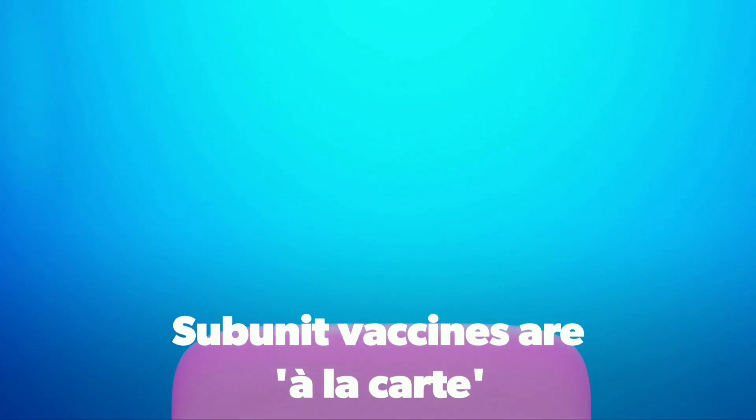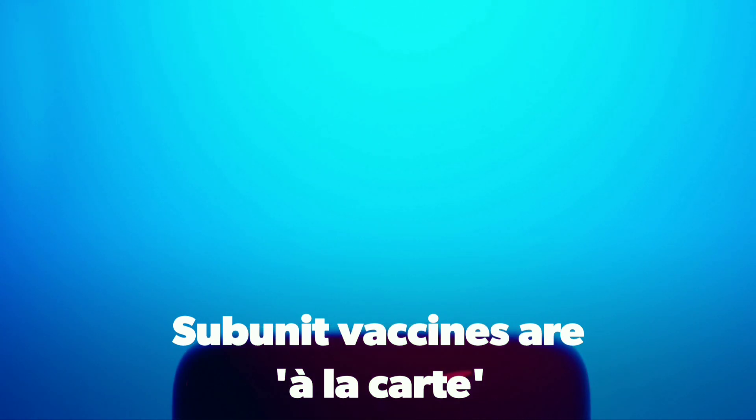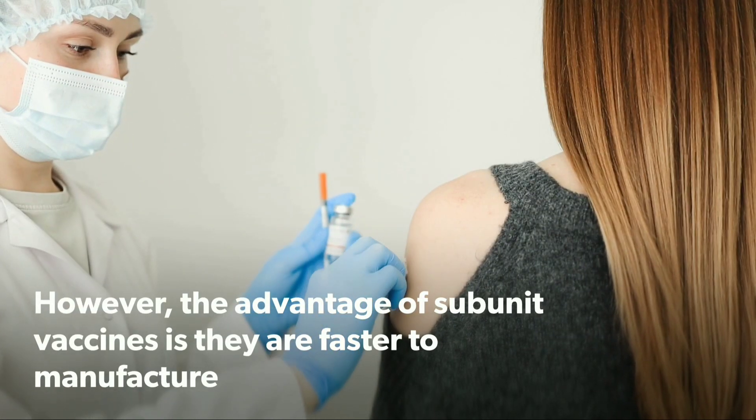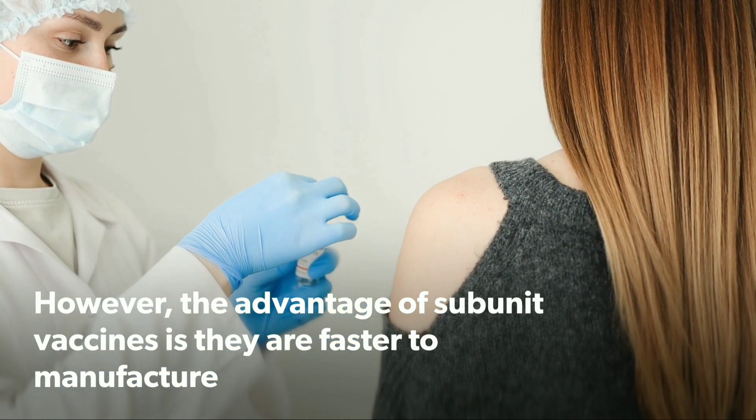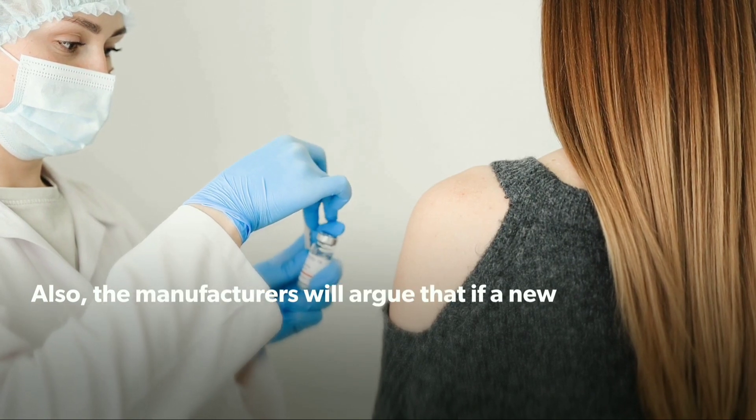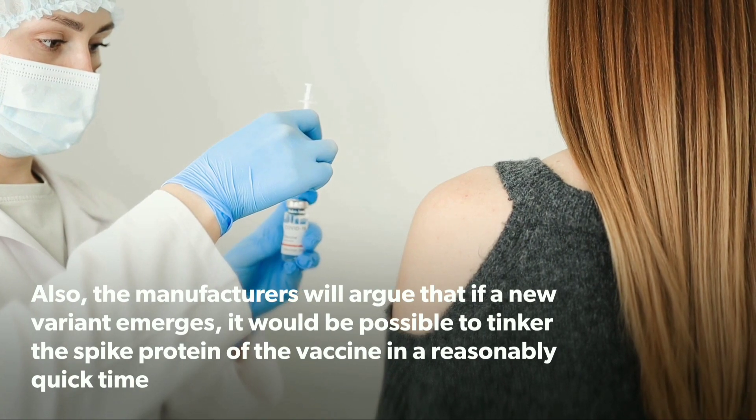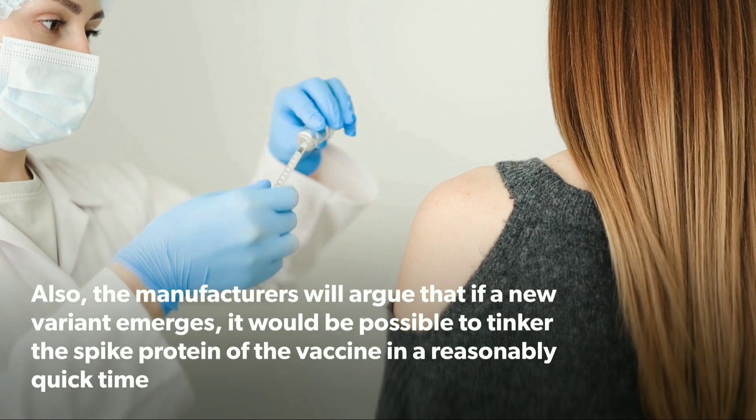Subunit vaccines being a la carte, it makes the body produce antibody response for only one or two spike proteins. However, the advantage of subunit vaccines is they are faster to manufacture. Also, the manufacturers will argue that if a new variant emerges, it would be possible to tinker the spike protein of vaccine in a reasonably quick time.